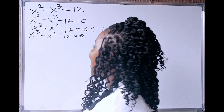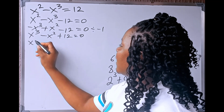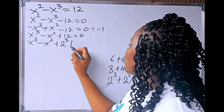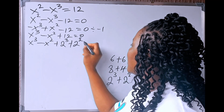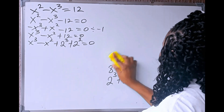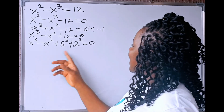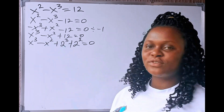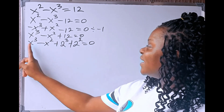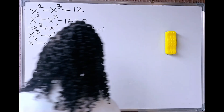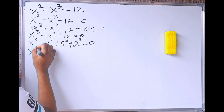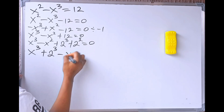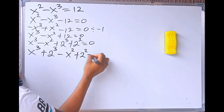Let's substitute this for 12 in the equation. If we do that, we are going to have x cubed minus x squared plus 2 cubed plus 2 squared equals 0. Now, let's rearrange it — take the ones with cube together and the ones with square together. We are going to have x cubed plus 2 cubed, then minus x squared plus 2 squared equals 0.